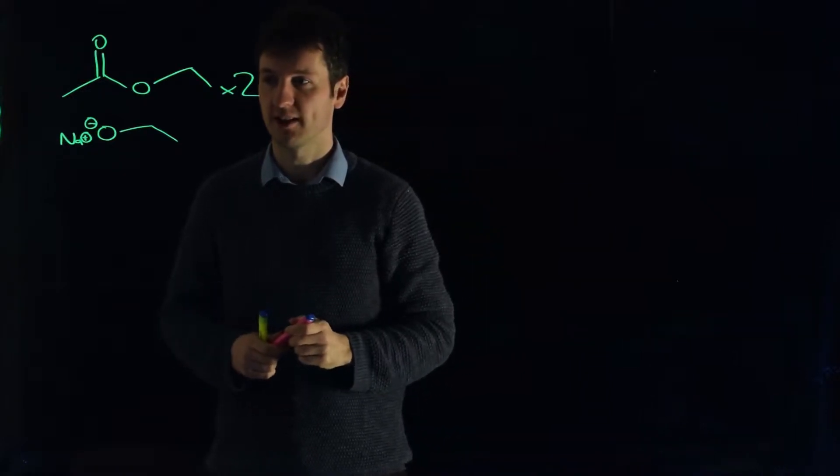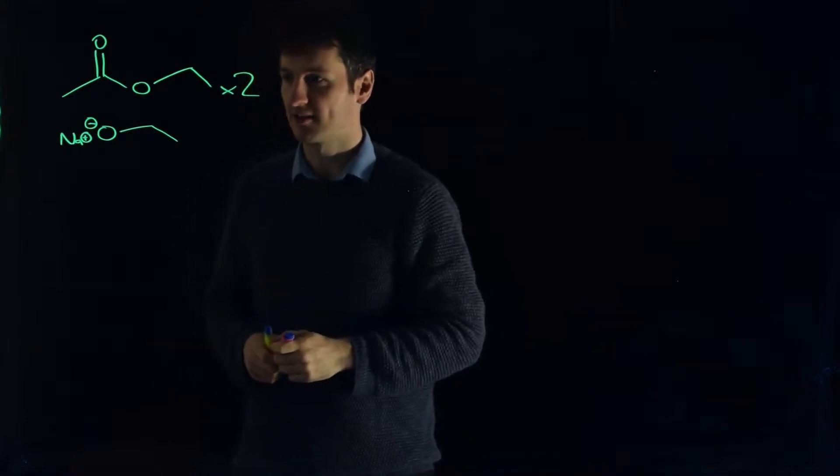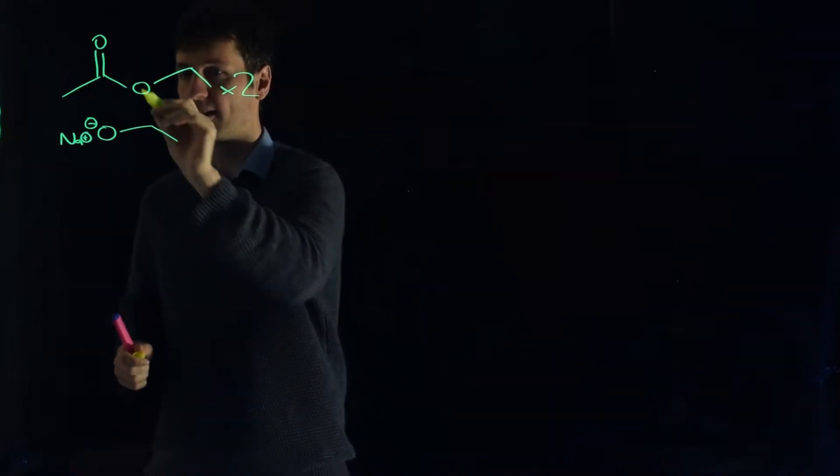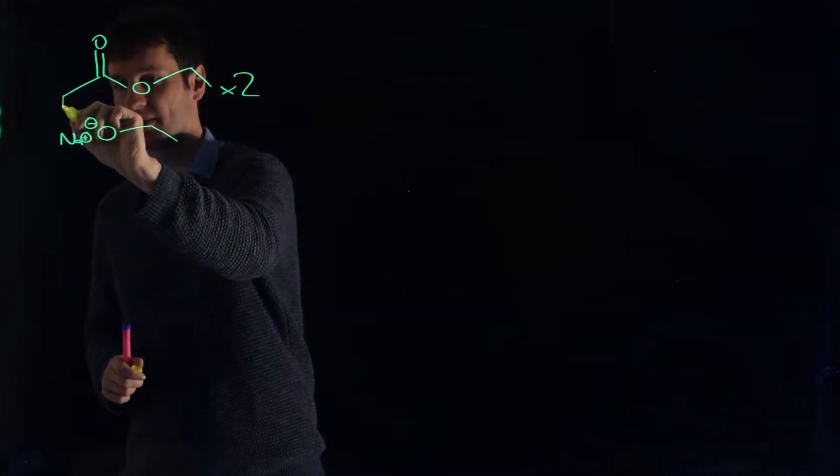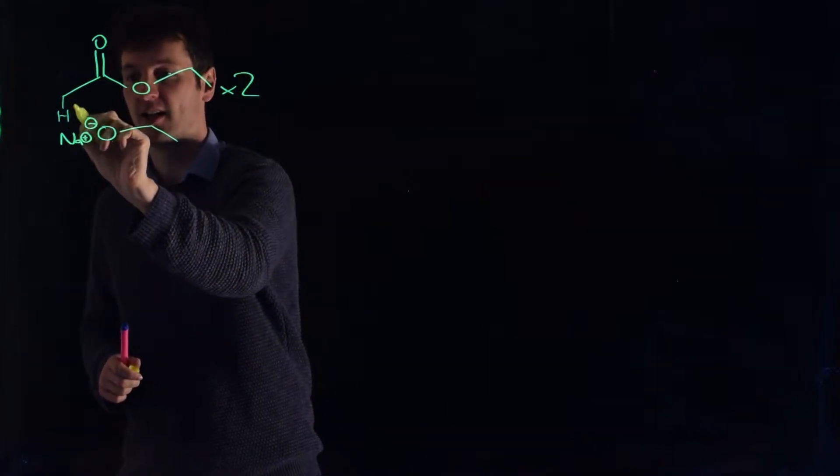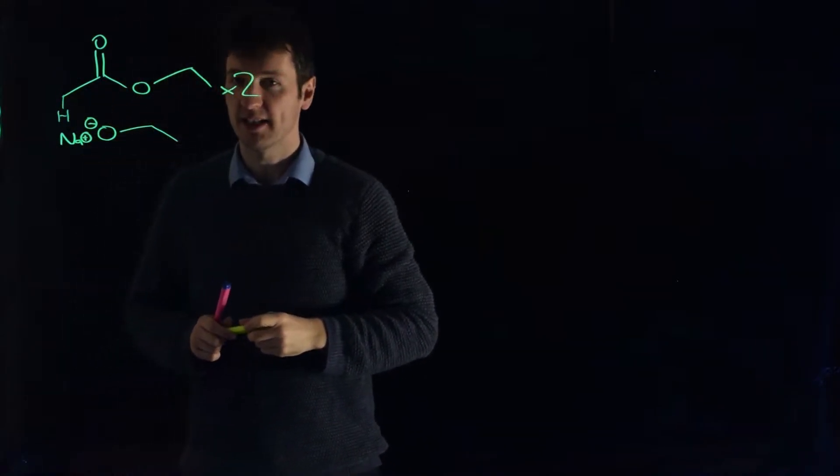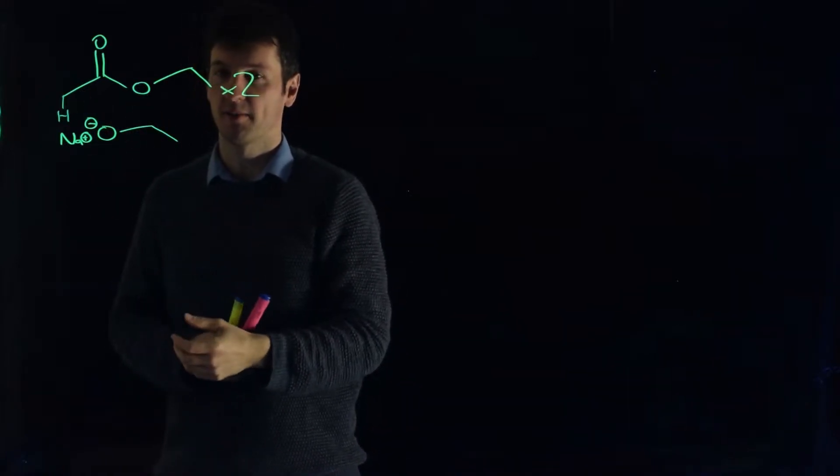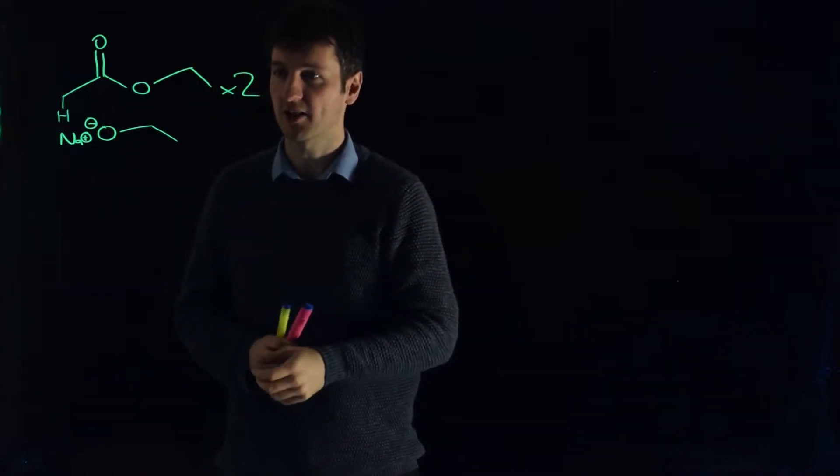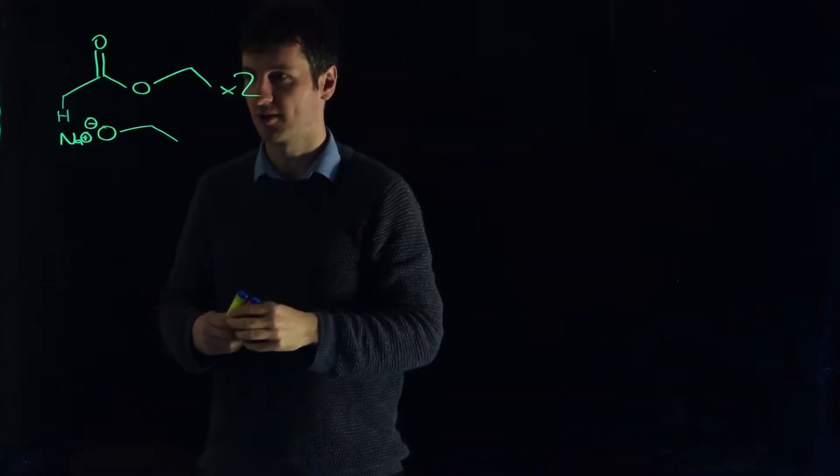So instead, we can treat this in a different manner. We can ignore that possible reaction and see what else is going to happen. Now, you'll have seen carbonyl carbons before, and you know that next to a carbonyl carbon, on the alpha position, these protons—there would be three, but I'll just draw in one—are reasonably easy to remove using a base. They're reasonably acidic, especially when you compare them to other carbons in alkyl chains. They're much, much, much more acidic.